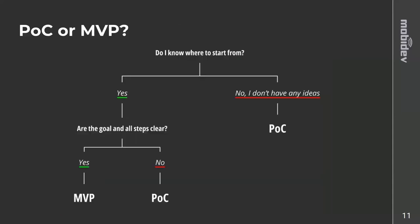Wrapping up what we discussed about POC and MVP — to figure out where to start, answer two questions. First: do you know where to start? If you don't have any idea and haven't faced this task before, it's better to start with a POC and invest some time in research. If you know where to start, ask whether the goal and steps are clear. If yes and you've done this before, you can start with an MVP and engage front-end developers. If no, proceed with a POC.